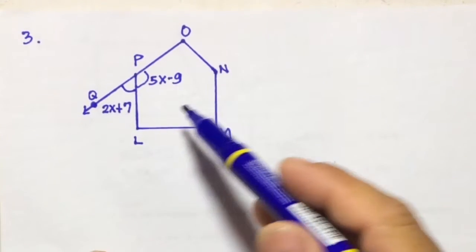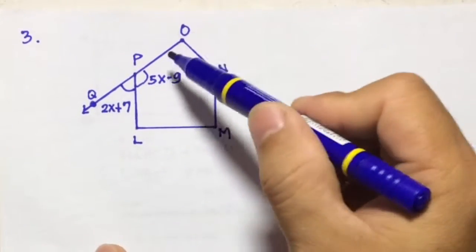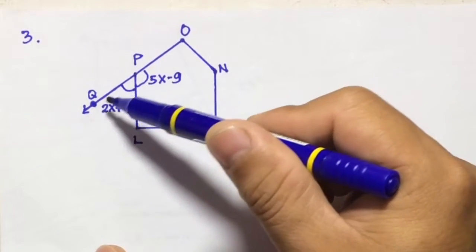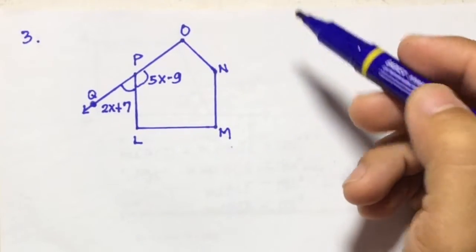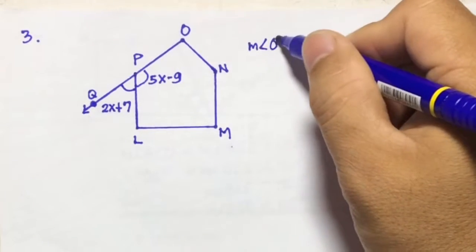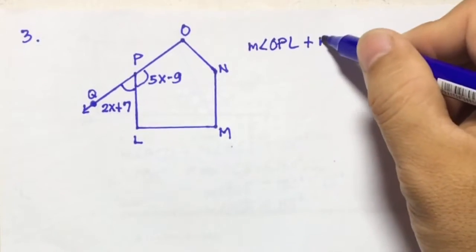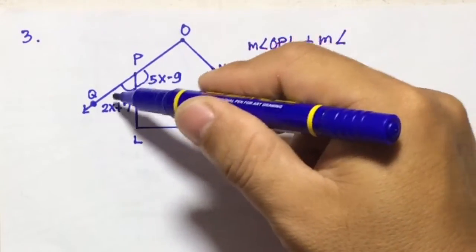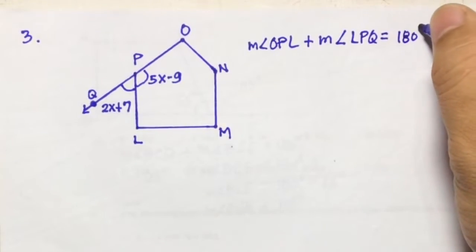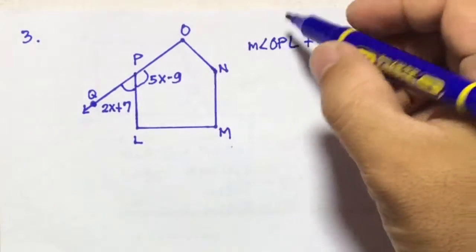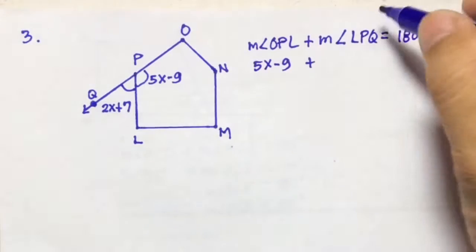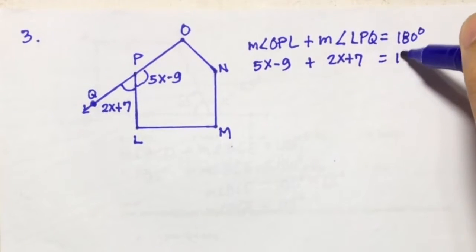Example number 3. We have pentagon L, M, N, O, P with angle OPL, the interior angle, equal to 5X minus 9 degrees, and angle LPQ equal to 2X plus 7 degrees. To solve this, the measure of angle OPL plus the measure of angle LPQ, the exterior angle, equals 180 degrees. So we have: (5X minus 9) plus (2X plus 7) equals 180.